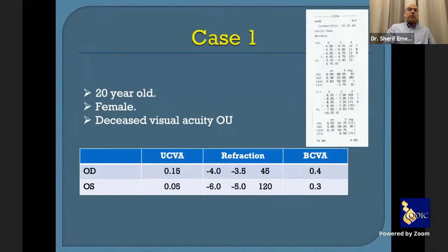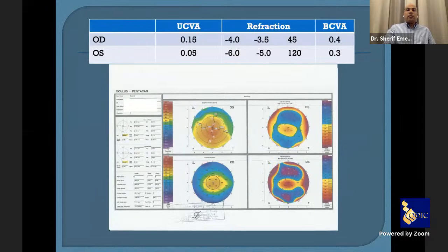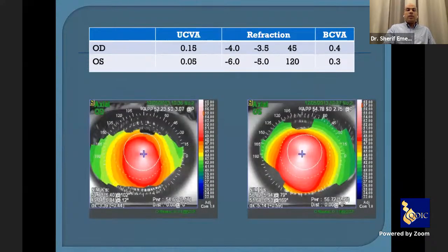My first case is a 20-year-old female diagnosed with keratoconus, complaining of decreased visual acuity in both eyes. Uncorrected vision was 0.15 in the right eye and 0.05 in the left. Best corrected vision was 0.4 and 0.3 respectively. On Pentacam, the left eye was more advanced — steep K of 56 and flat K of 51, versus 52 and 49 in the right eye.